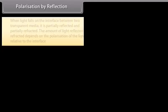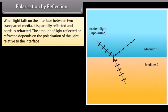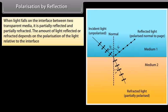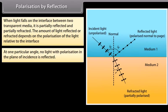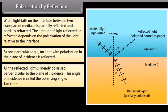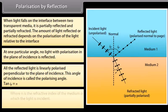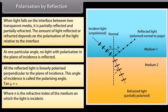When light falls on the interface between two transparent media, it is partially reflected and partially refracted. The amount of light reflected or refracted depends on the polarization of the light relative to the interface. When unpolarized light strikes the interface between medium 1 and medium 2, at one particular angle no light with polarization in the plane of incidence is reflected; all the reflected light is linearly polarized perpendicular to the plane of incidence. This angle is called the polarizing angle. Tan(Ip) = n, where n is the refractive index of the medium — this is known as Brewster's law.